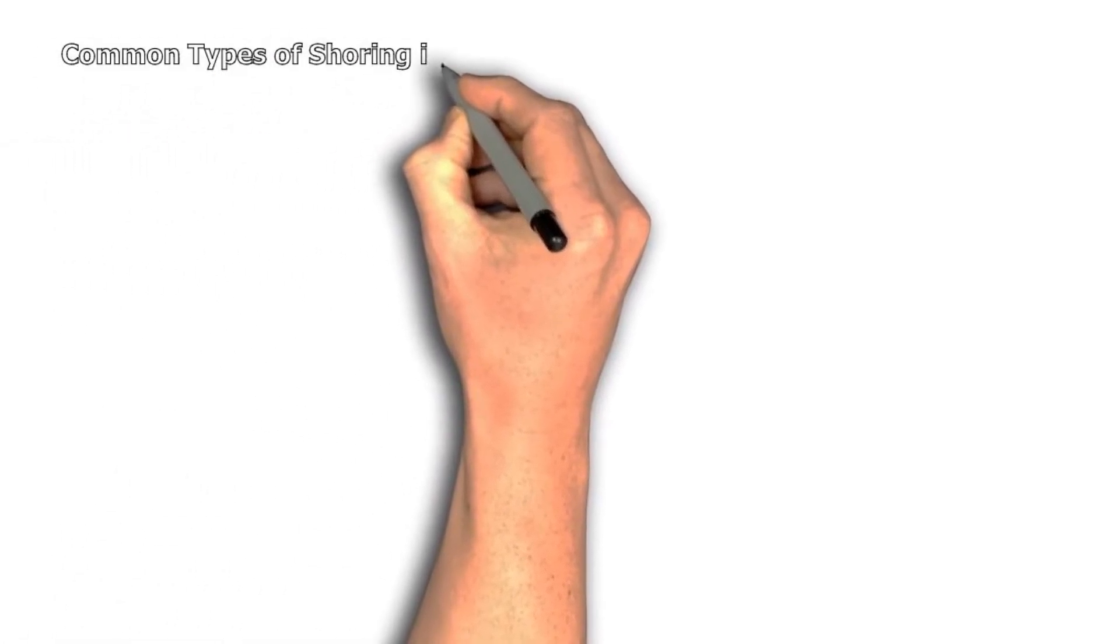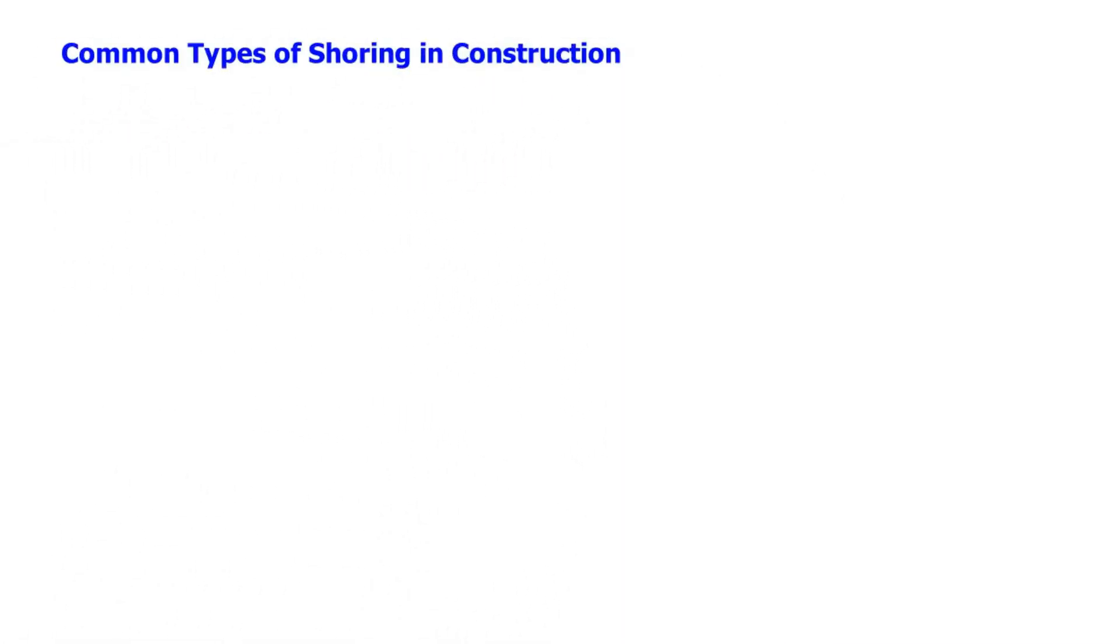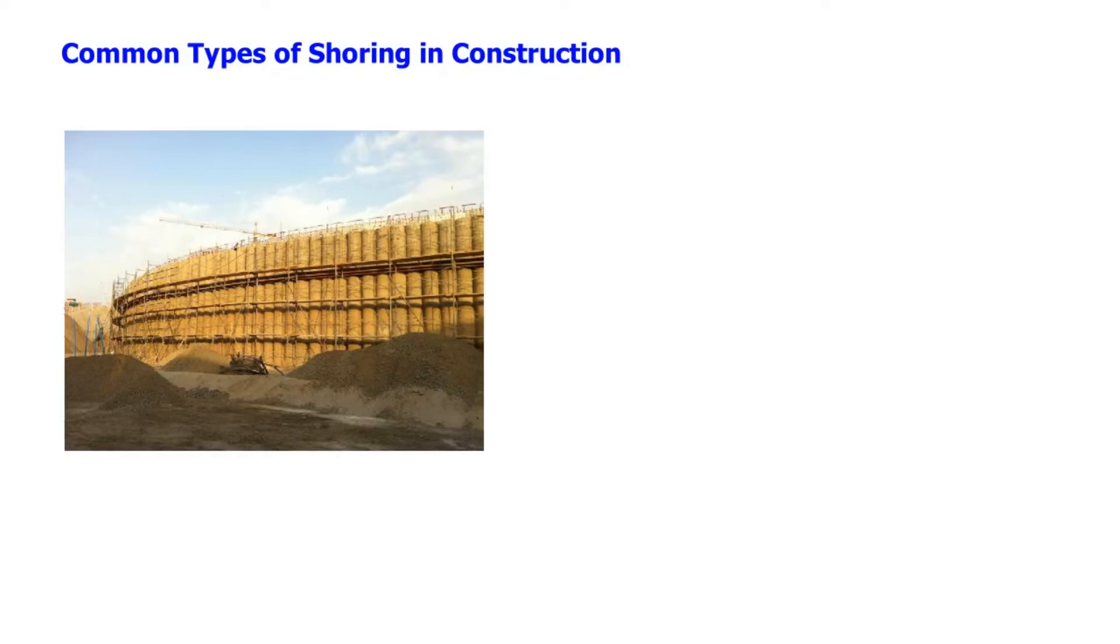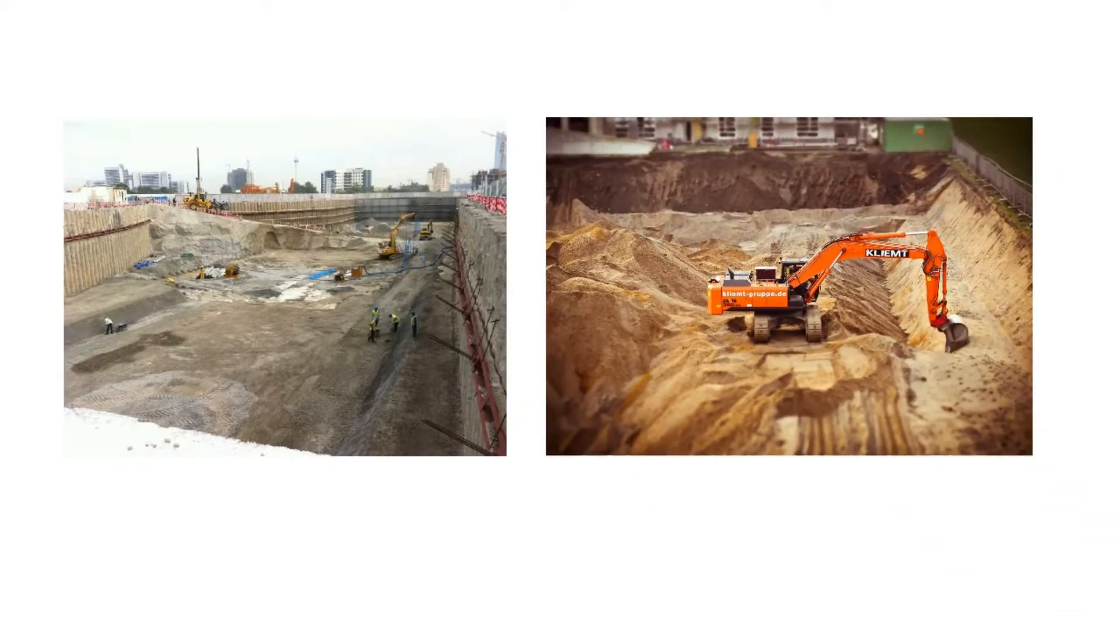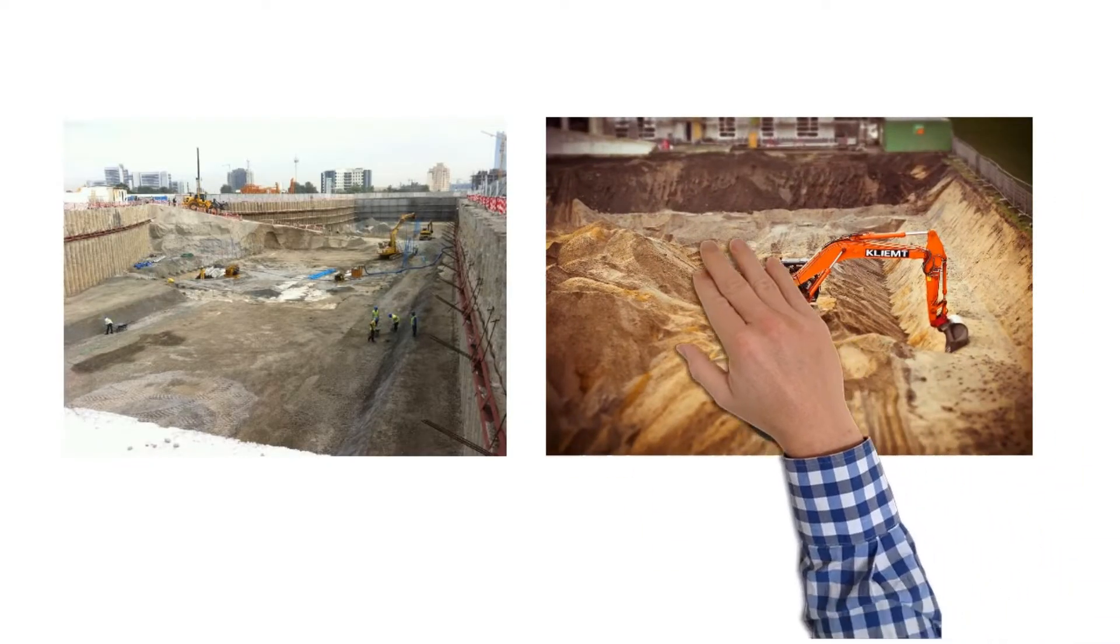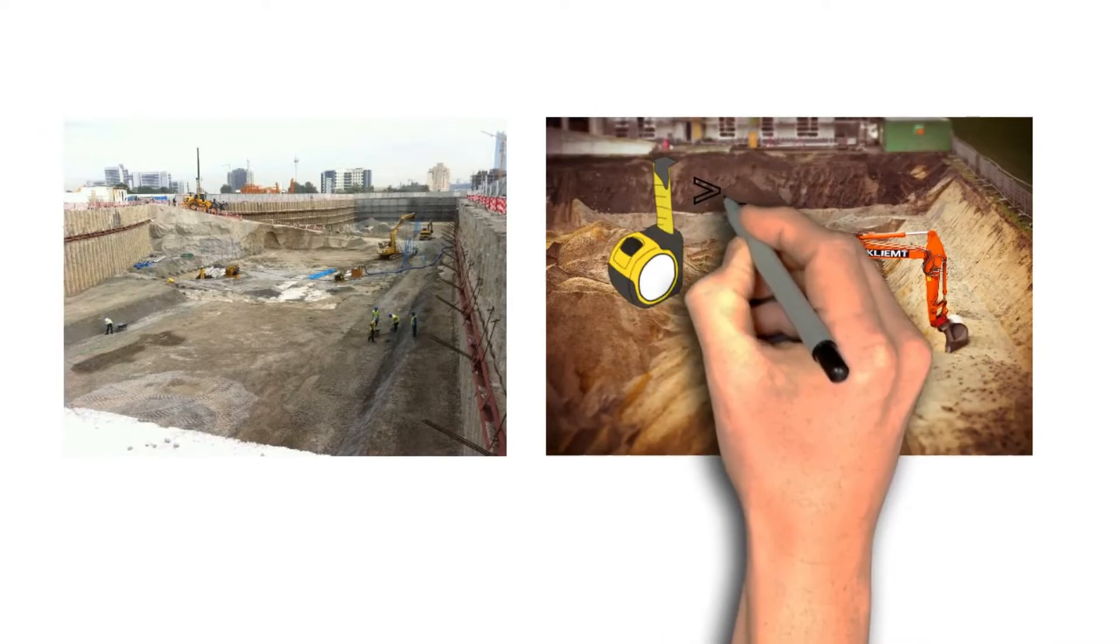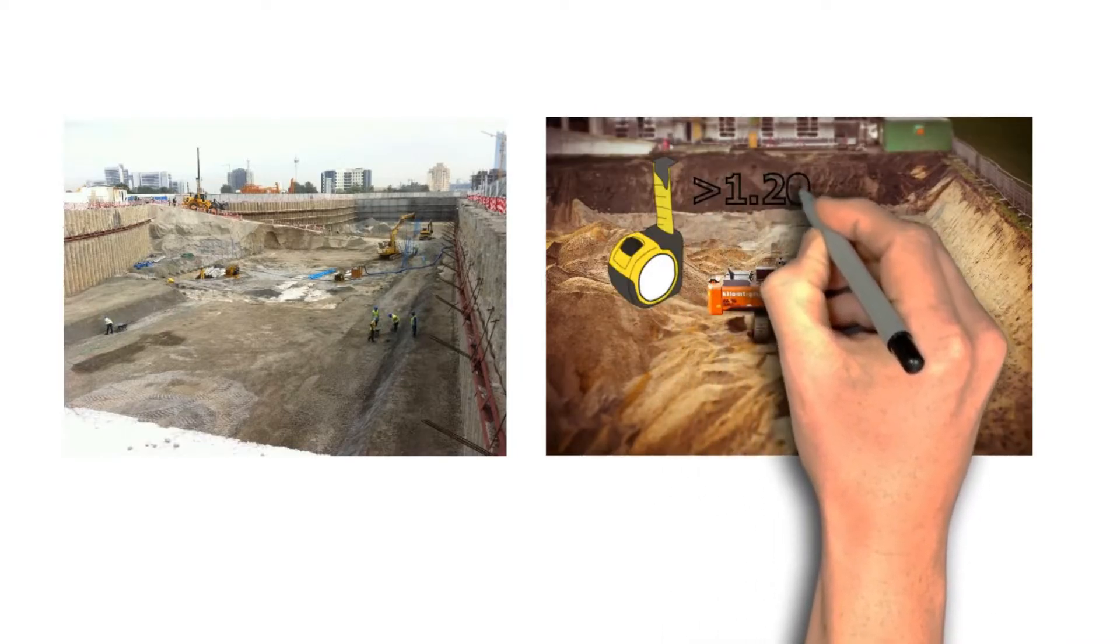Common Types of Shoring in Construction. Shoring in construction is used to support a deep excavation to prevent the retained soil from overturning and eventually causing a project mishap. Depending on the soil type, shoring support is usually provided when we need to support an excavation with at least 1.2 meter height.